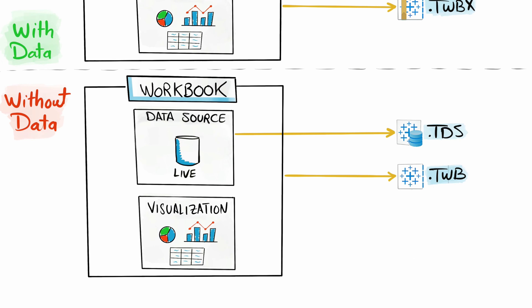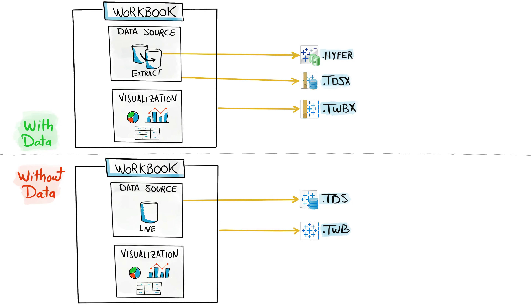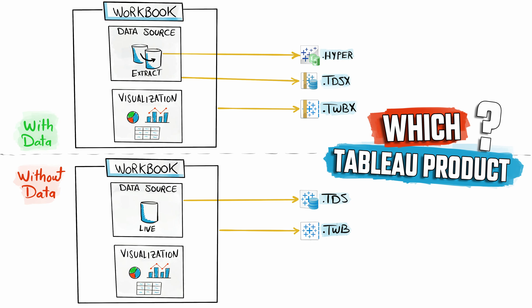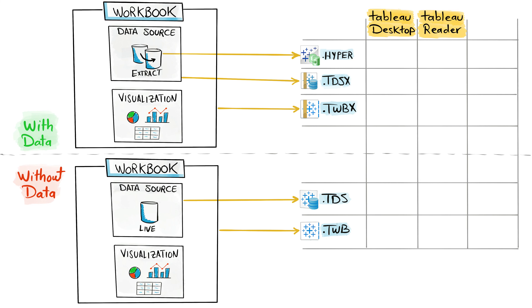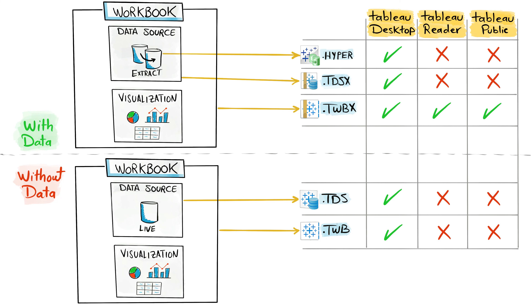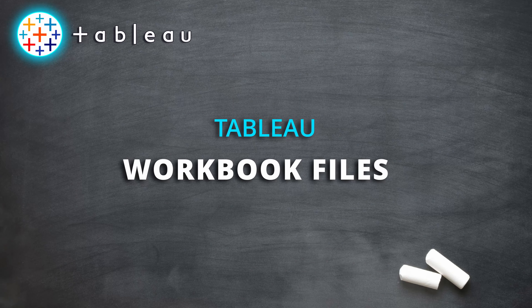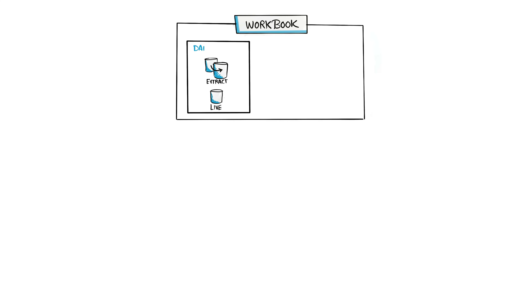With the workbook without data, you can send TDS or TWB. You might ask which Tableau products are needed to open these files. We have three: Tableau Desktop, Tableau Public, and Tableau Reader. With Tableau Desktop you can open all file formats, but Tableau Reader and Tableau Public can only open the Tableau Packaged Workbook, TWBX, since they cannot connect directly to data sources or use live connections.